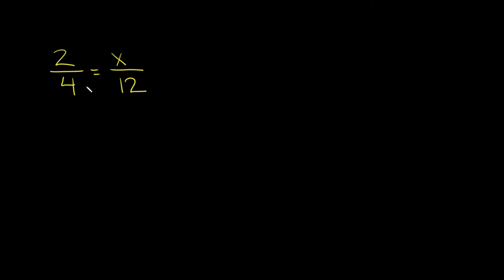The first way we're gonna solve this is by cross multiplying. When you cross multiply, it's really helpful to just draw a couple lines — you're literally gonna cross them. Draw a line from this denominator to this numerator, and then do the same thing the other way, from this numerator to this denominator. That's showing you what you're going to multiply together.